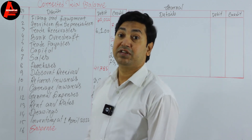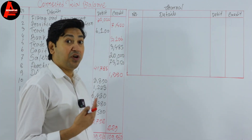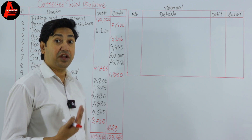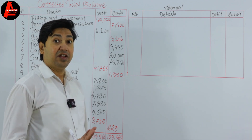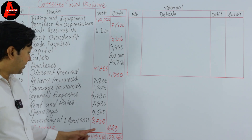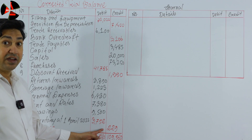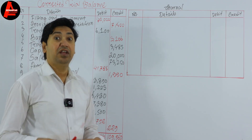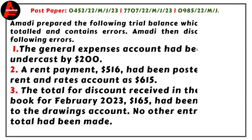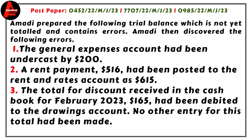Now we will check what was the mistake — what is the journal entry to rectify the errors. And later, we have a suspense account of $229 on the credit side. We will prepare a suspense account. We have this question from the 2023 IGCSE accounting past papers, and here we have three transactions. Amadi discovered the following errors after preparing this trial balance.